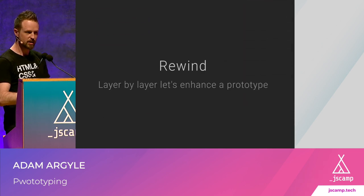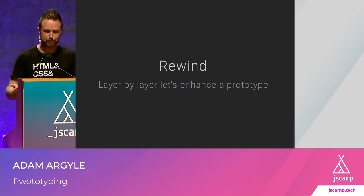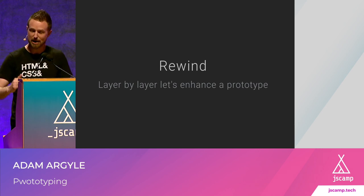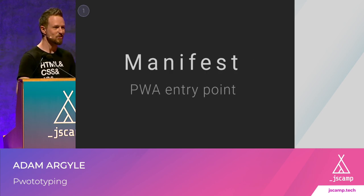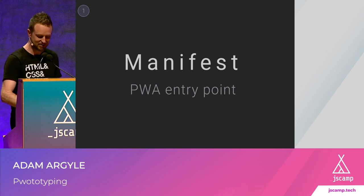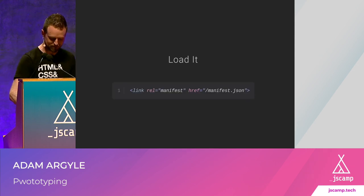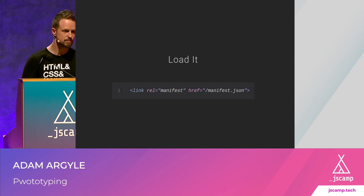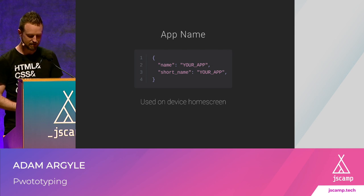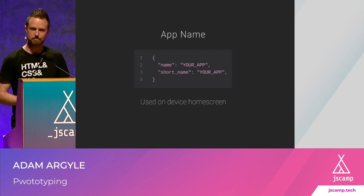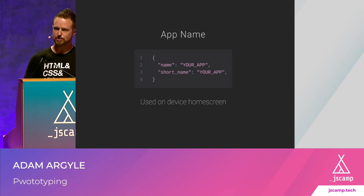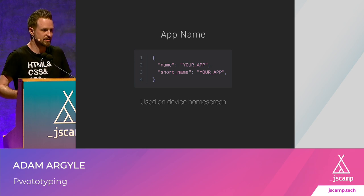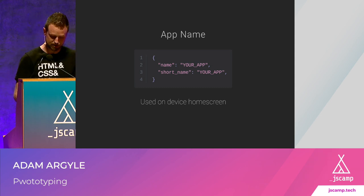We're going to rewind — we saw the demo. Hopefully you've tried it on your phone: add it to your home screen, launch it. We're going to unpack that line by line and start with the manifest — this is the PWA entry point. In your HTML you reference your manifest file. Inside it you specify your app name and short name. This is the name that shows up on the home screen, and it's an important part of your brand. I like to also have this match the title in my HTML — that's optional.